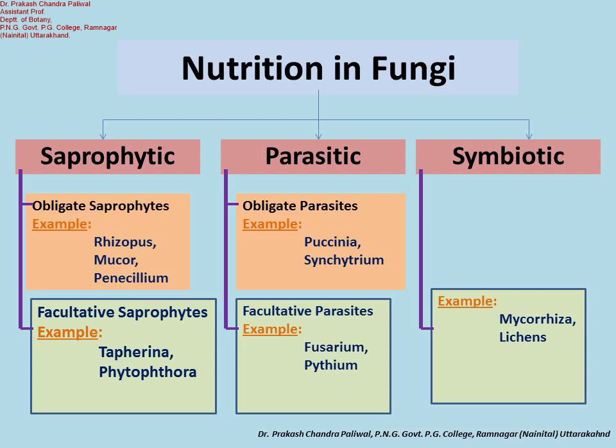The third category is the symbiotic association, or the symbiotic mode of nutrition in fungi. In symbiosis, fungi depend on another living organism for their survival, but the relationship between the two organisms is mutual — both are benefited by each other. During nutrition, both inorganic and organic materials play a role in the nutrition of fungi.